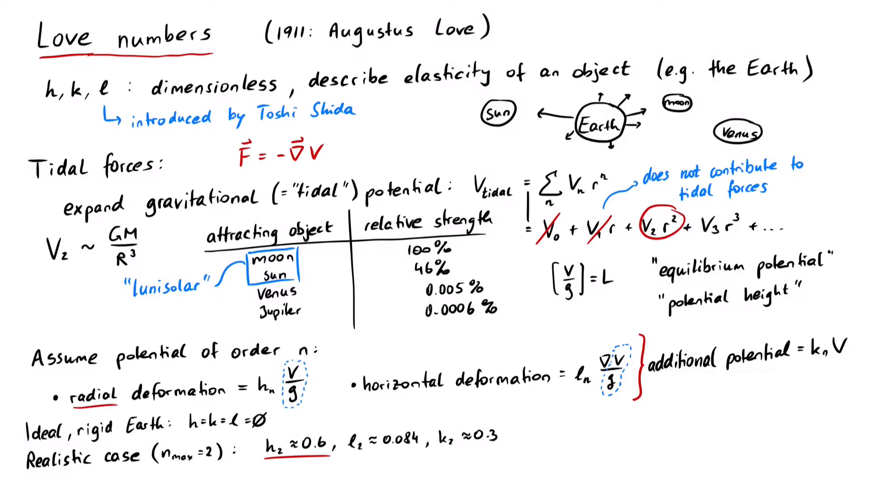If we use spherical coordinates, we can describe the horizontal deformation more detailed, as u_theta being equal to l_n times the derivative of V with respect to theta, divided by g. And u_phi is l_n times the derivative of V with respect to phi, divided by the sine of theta, and g. And that's pretty much it for this video. Thanks for watching.